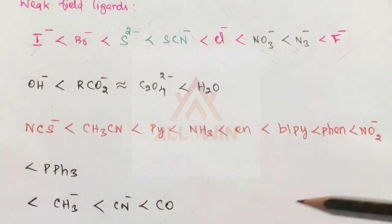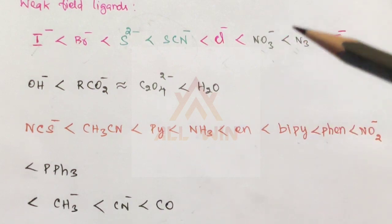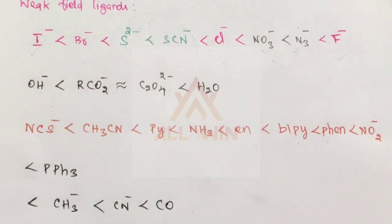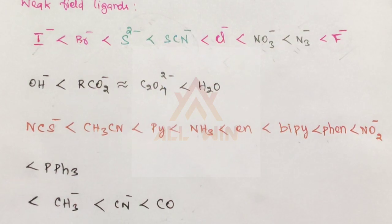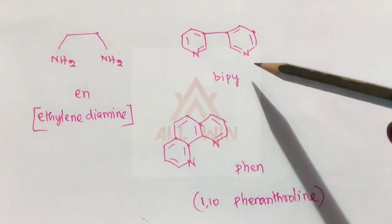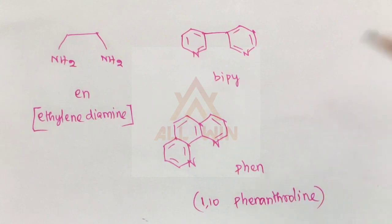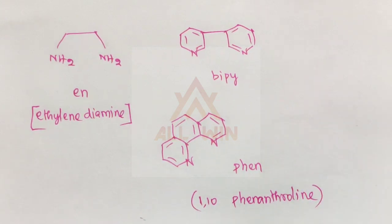So, from the maximum to minimum field strength, we have arranged all the ligands. That means you can answer these questions using the spectrochemical series. The strong field ligands include Ethylenediamine, Bipyridine, and 1,10-Phenanthroline. Let's move to the next question.